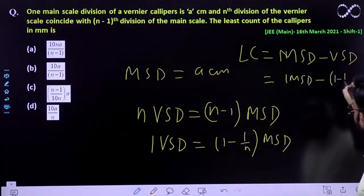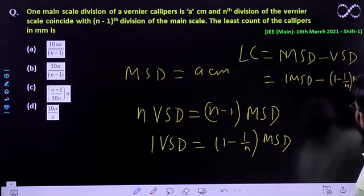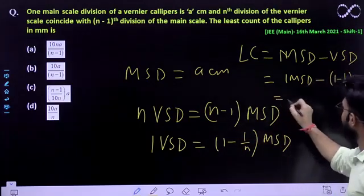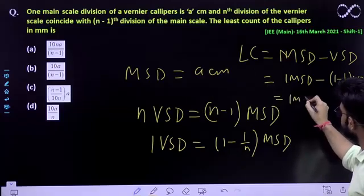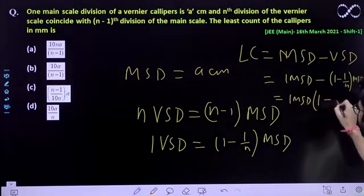It will be (1 - 1/n) times MSD. So putting the value of VSD, what you will be getting? Take MSD common.